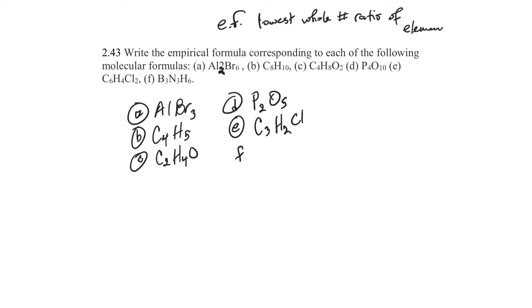And the last one, B3N3H6, three will go into all those, so B reduces down, N reduces down, and H2. So these would be the empirical formulas of the molecular formula that you saw before.